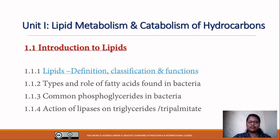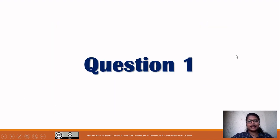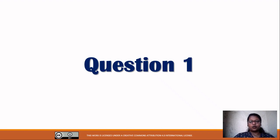This question will be based on topic number one, which we have done — that is lipid definition, classification, and functions. Before starting, let me tell you the rules. You will have five questions with three options each: option A, option B, and option C. You will get 10 seconds to solve one question. Once I read out the question and options, the timer will start.